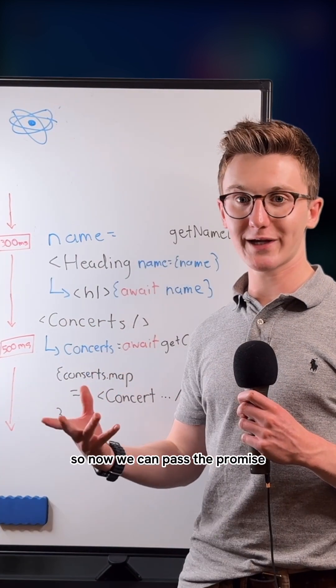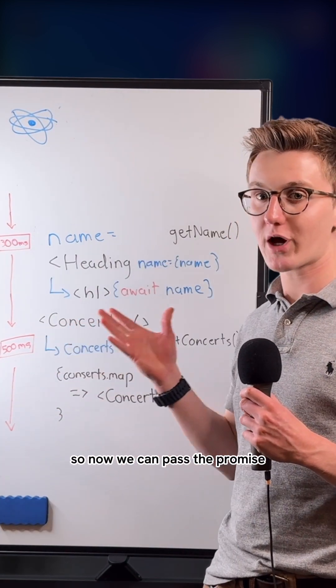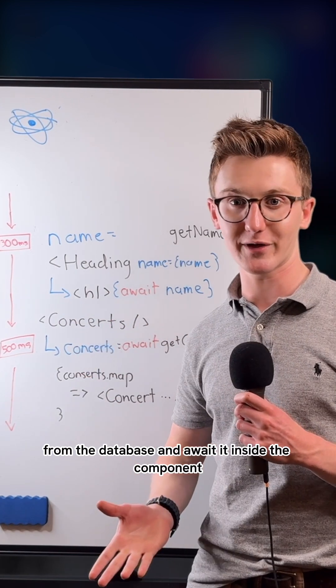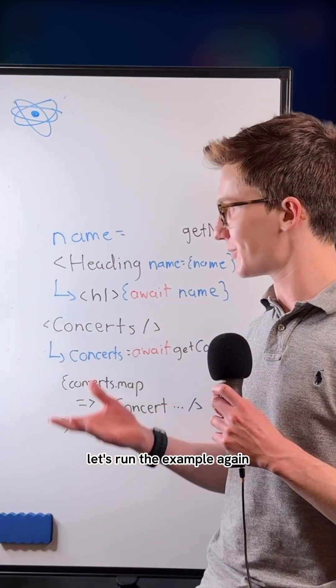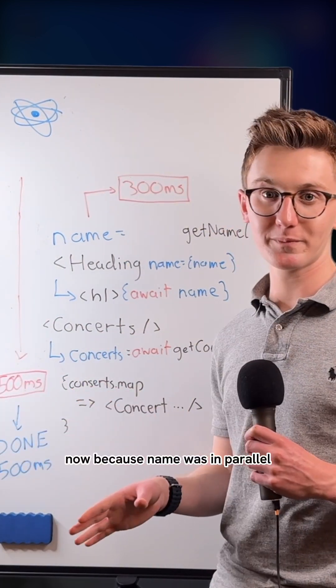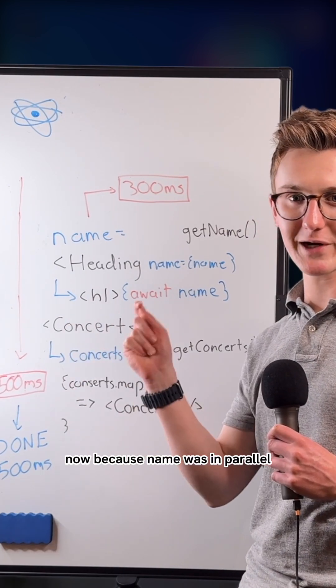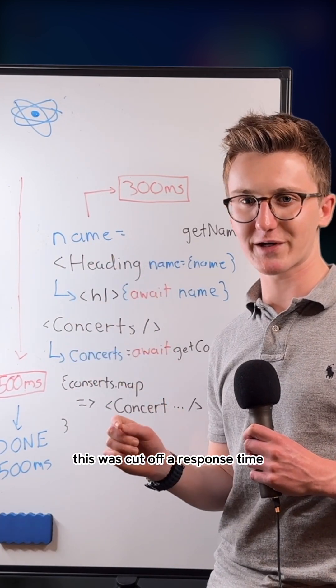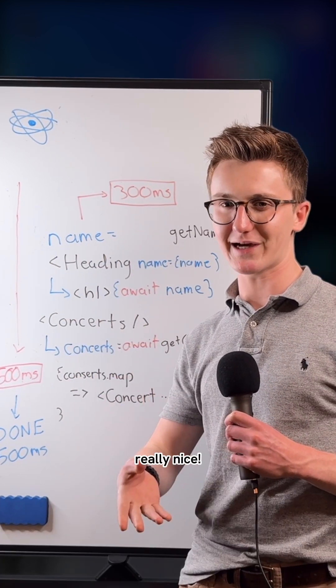So now we can pass the promise from the database and await it inside the component. Let's run the example again. Now, because the name was fetched in parallel, this was cut off from the response time. Really nice.